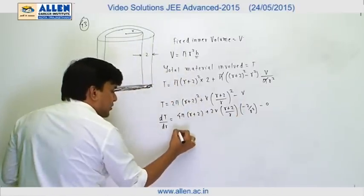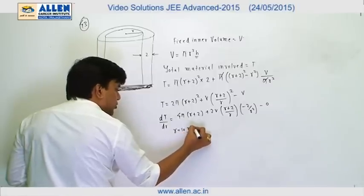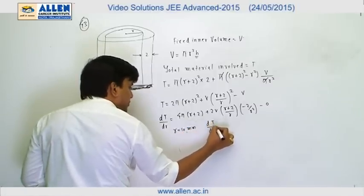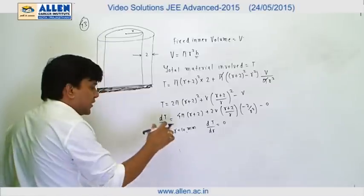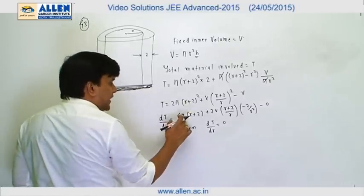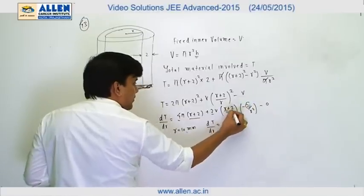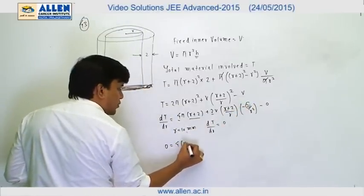Now at r equals 10 mm, this is minimum. So dT/dr for this r is going to be 0. We can see that (r + 2) is common, so we can take 4(r + 2) as common.